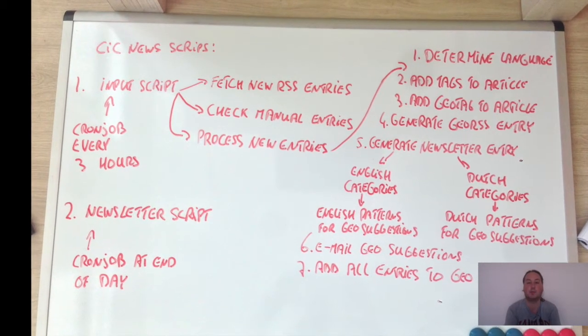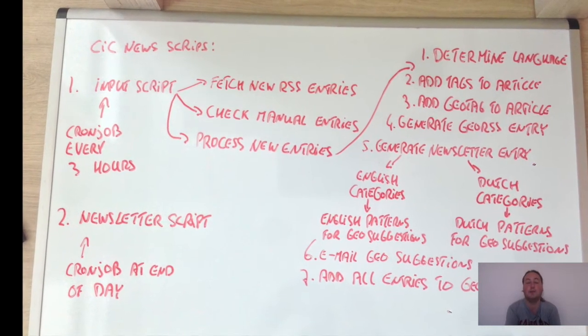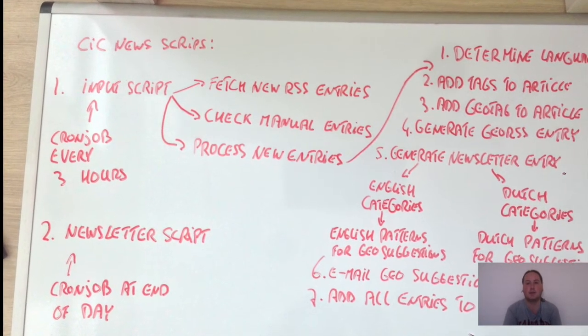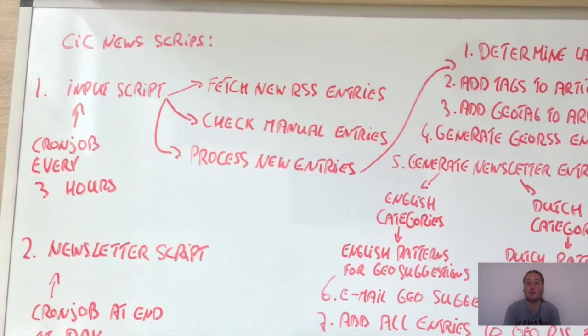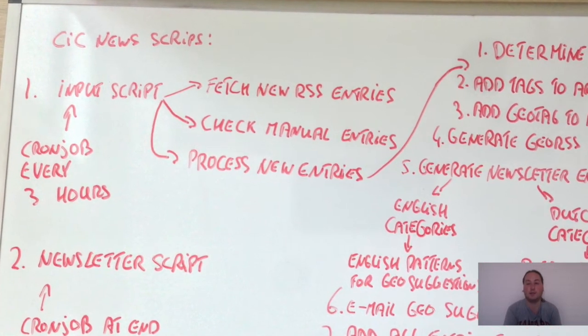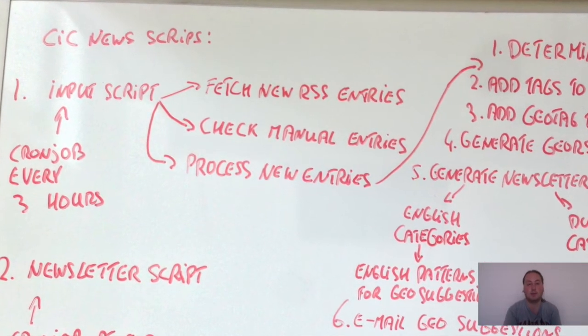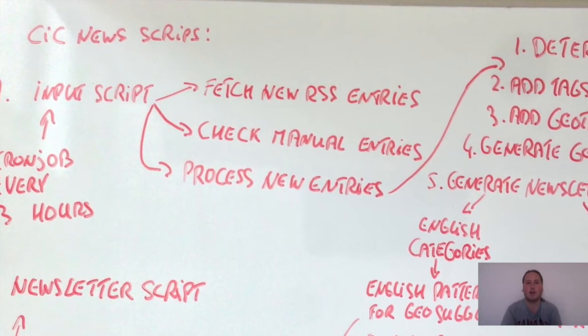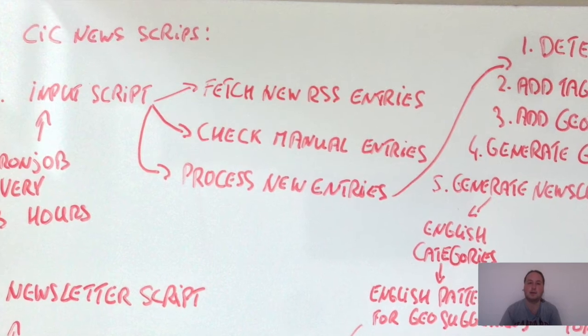The input script has three tasks. The first one is to start the RSS input script and fetch new RSS entries. Second, it checks if there are manual entries added via the PHP web form. Last, it starts the processing script for all the new entries.